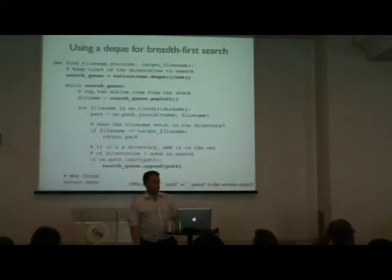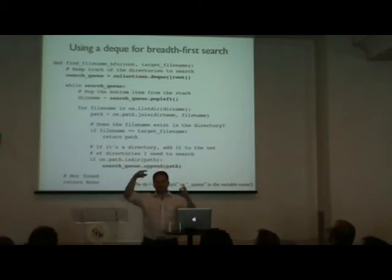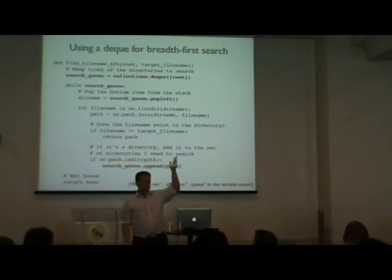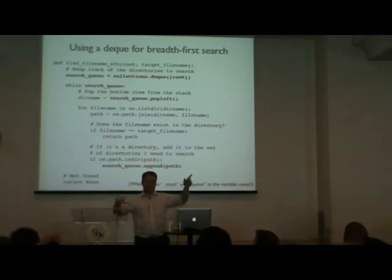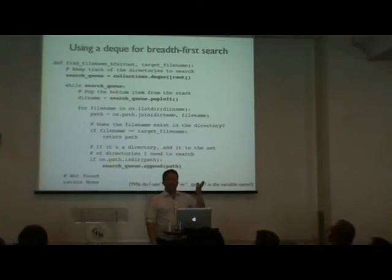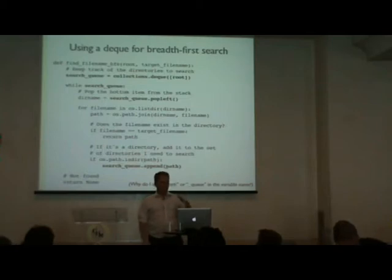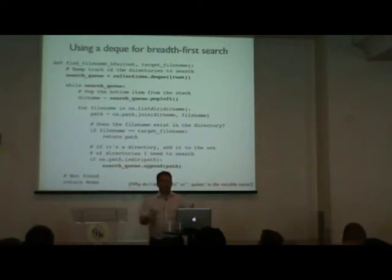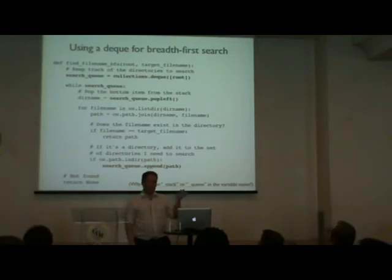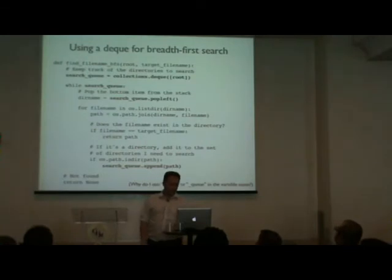I'll now take the previous breadth-first search code and use a deque. The only changes are: initialize with collections.deque([root_directory]) instead of a plain list, and say popleft() instead of pop(0). There's a strong preference for saying popleft() rather than pop(0). Other than renaming the variable from 'search_stack' to 'search_queue', that's it — no other changes needed.